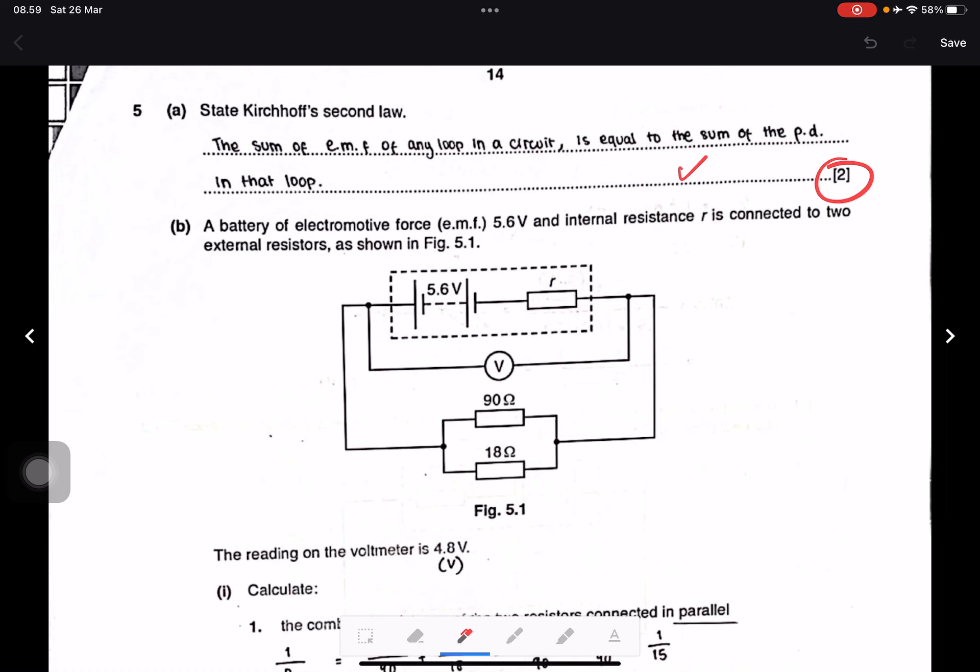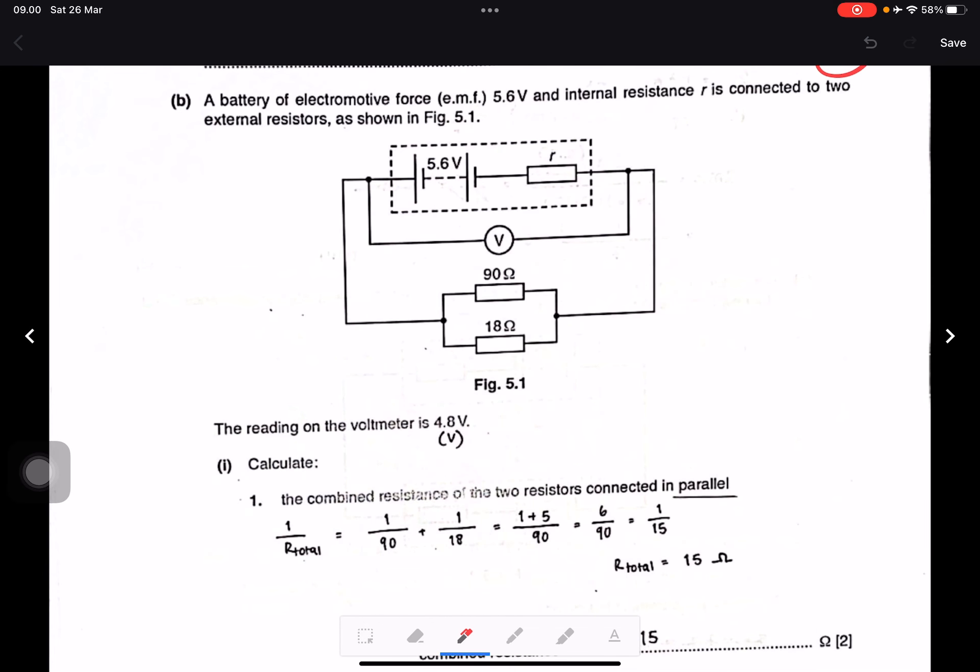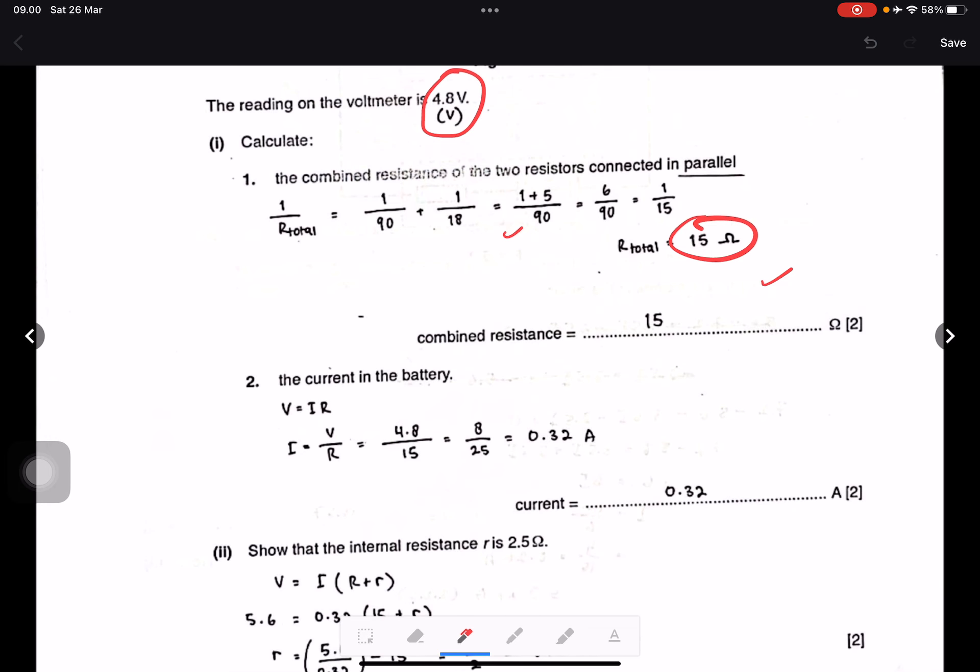Question B: A battery of electromagnetic force EMF 5.6 volts and internal resistance r is connected to two external resistors as in figure 5.1. The reading on the voltmeter is 4.8 volts. Calculate the combined resistance of the two resistors connected in parallel. This is 15 ohms. Then calculate the current in the battery using Ohm's law: V equals IR, so I equals V divided by R. The voltage on the voltmeter is 4.8, and the resistor is 15 ohms combined. So 4.8 divided by 15 equals 0.32 amps.